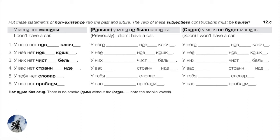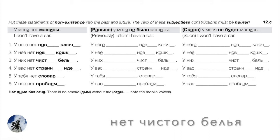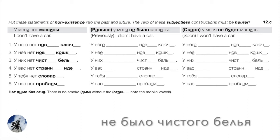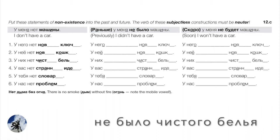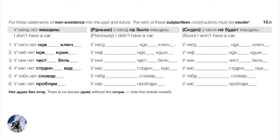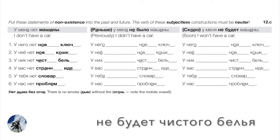Number three — чистое бельё, a soft neuter noun. They don't have clean laundry: У них нет чистого белья — note the softness: белья with я instead of а. Past: У них не было чистого белья. Future: У них не будет чистого белья.